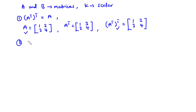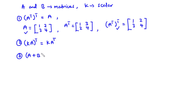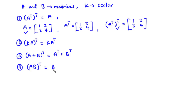Property 2: The transpose of the scalar multiple of K and A is equal to the scalar multiple of K and the transpose of matrix A. You can prove this property yourself. Property 3: The transpose of (A + B) is equal to the transpose of A plus the transpose of B. Property 4: The transpose of (A × B) is equal to the transpose of B times the transpose of A.